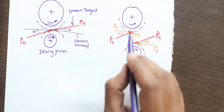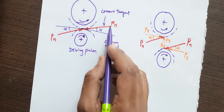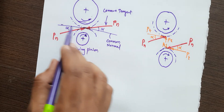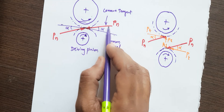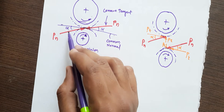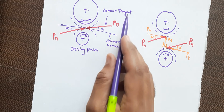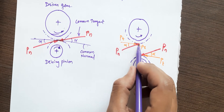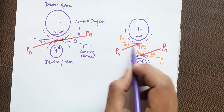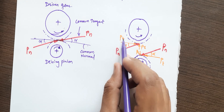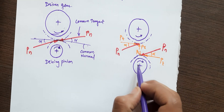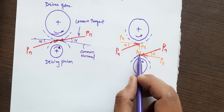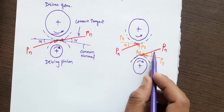This angle is the pressure angle. The force acts along the common tangent line, and the angle between the common tangent and the common normal is the pressure angle alpha. Resolving the resultant force PN into two components gives a tangential component and a radial component. The tangential component on the gear equals the tangential component on the pinion, and similarly for the radial components, since alpha is the same.